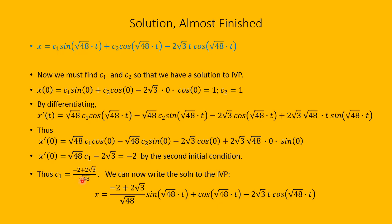With c1 = (-2 + 2√3)/√48 and c2 = 1, substituting these back gives the full particular solution x(t) to this initial value problem.